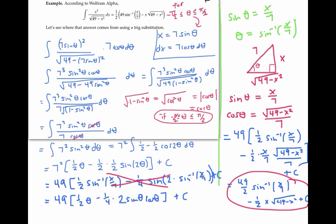This was a complicated problem, but the key step was to use this trig substitution. And then that allowed us to use a trig identity in order to rewrite our square root and get rid of the square root.